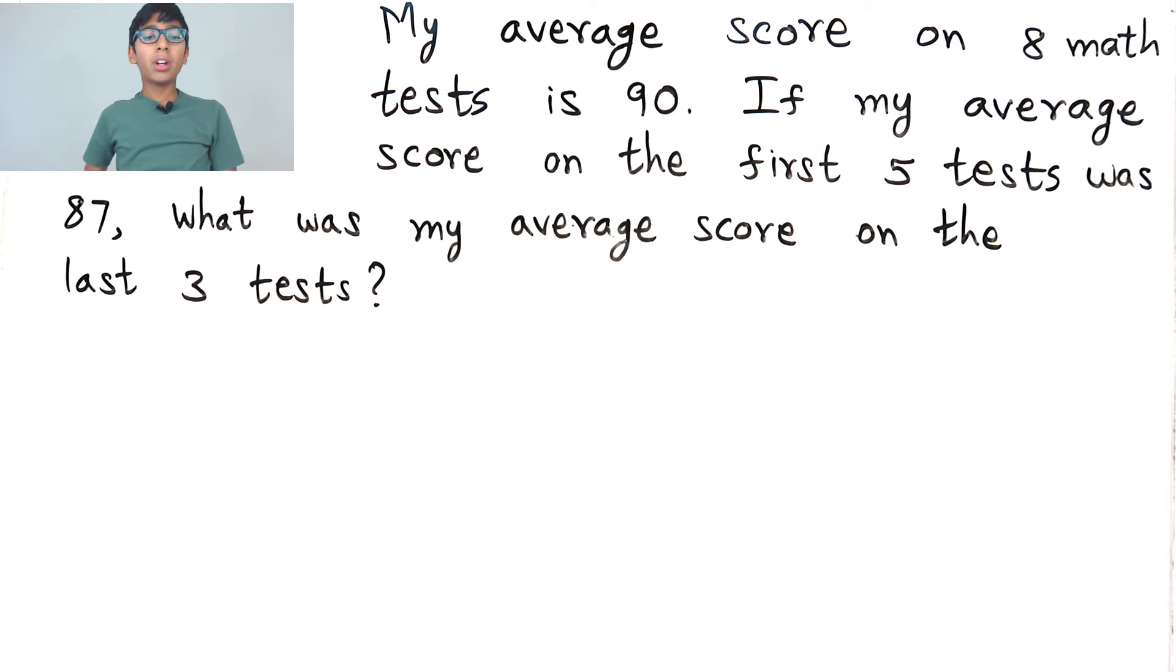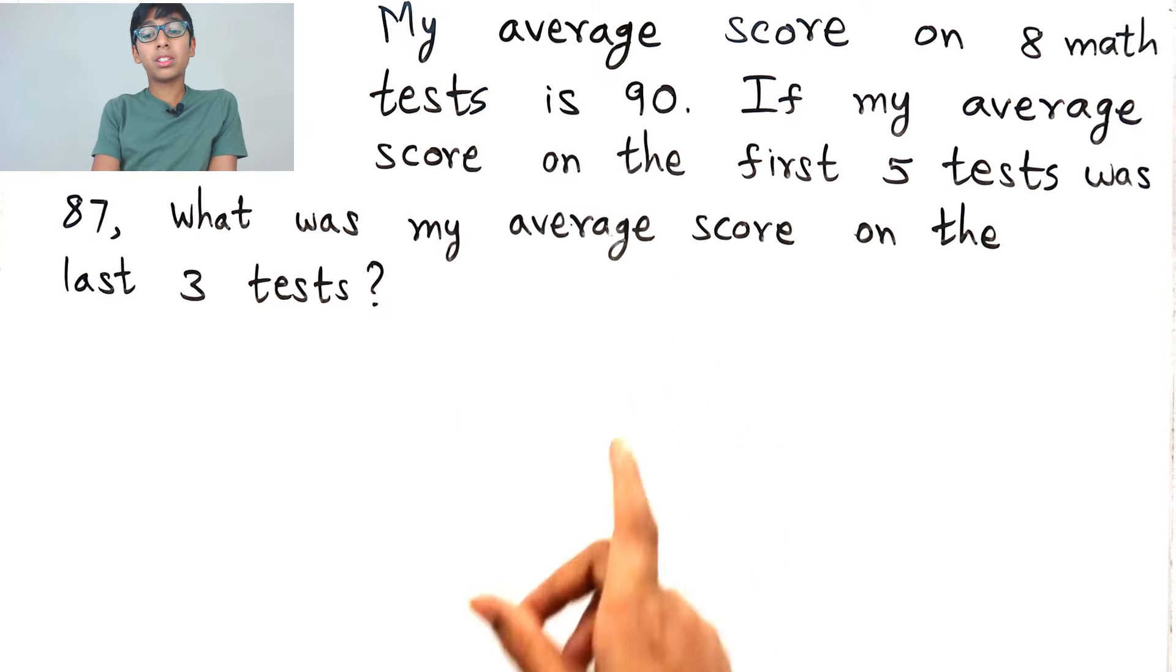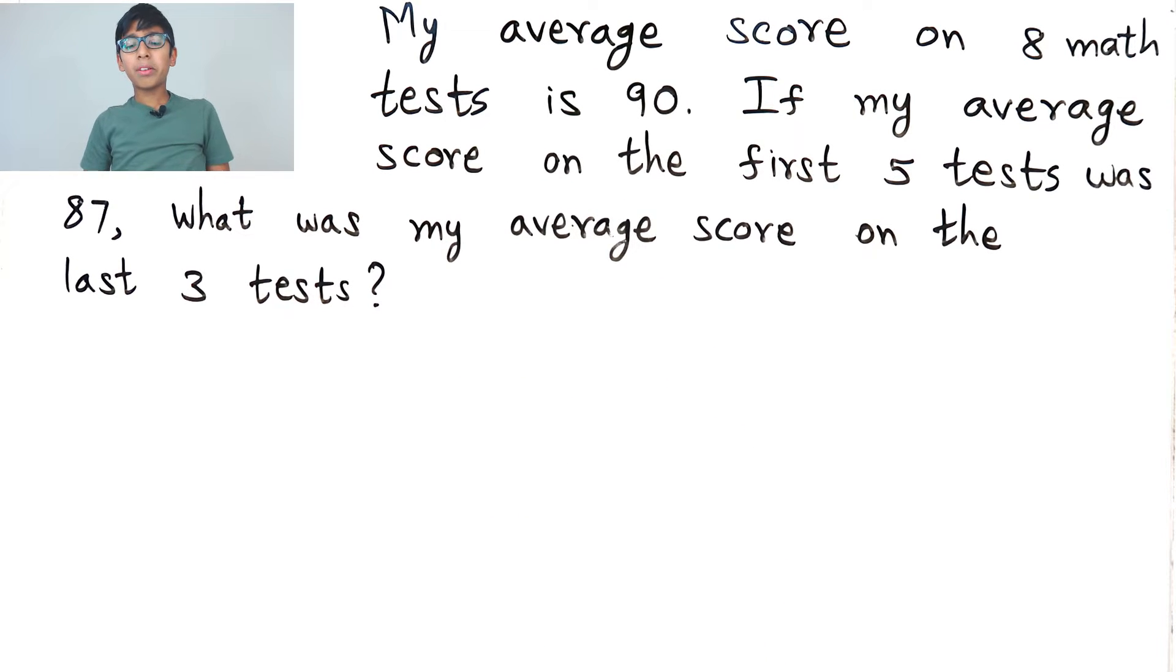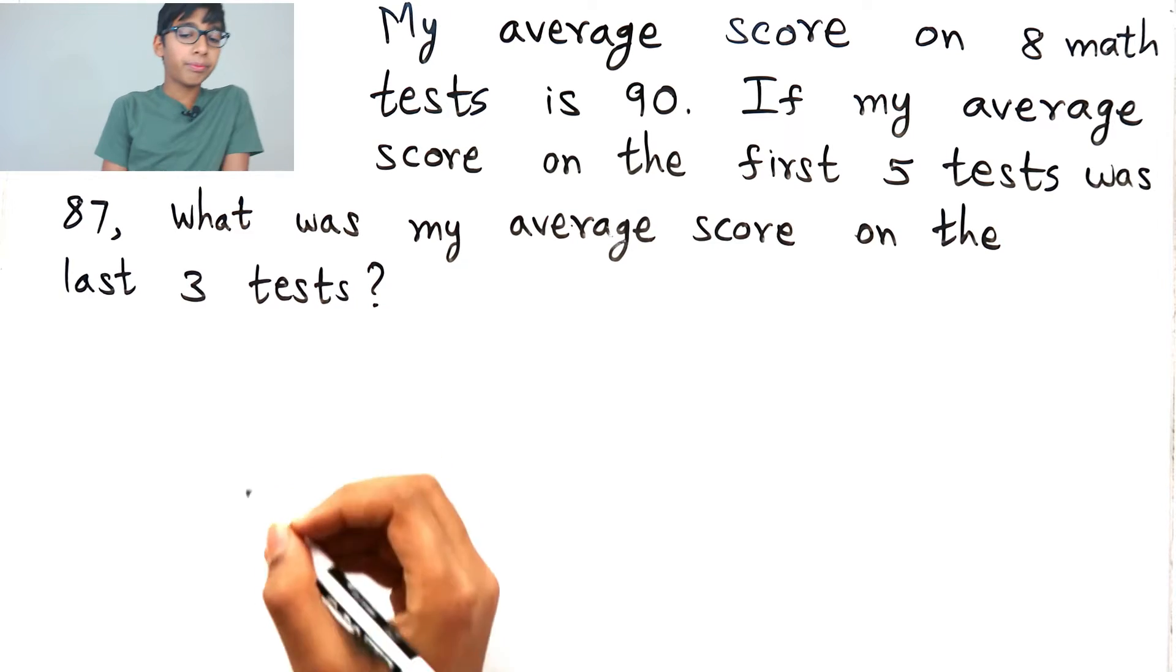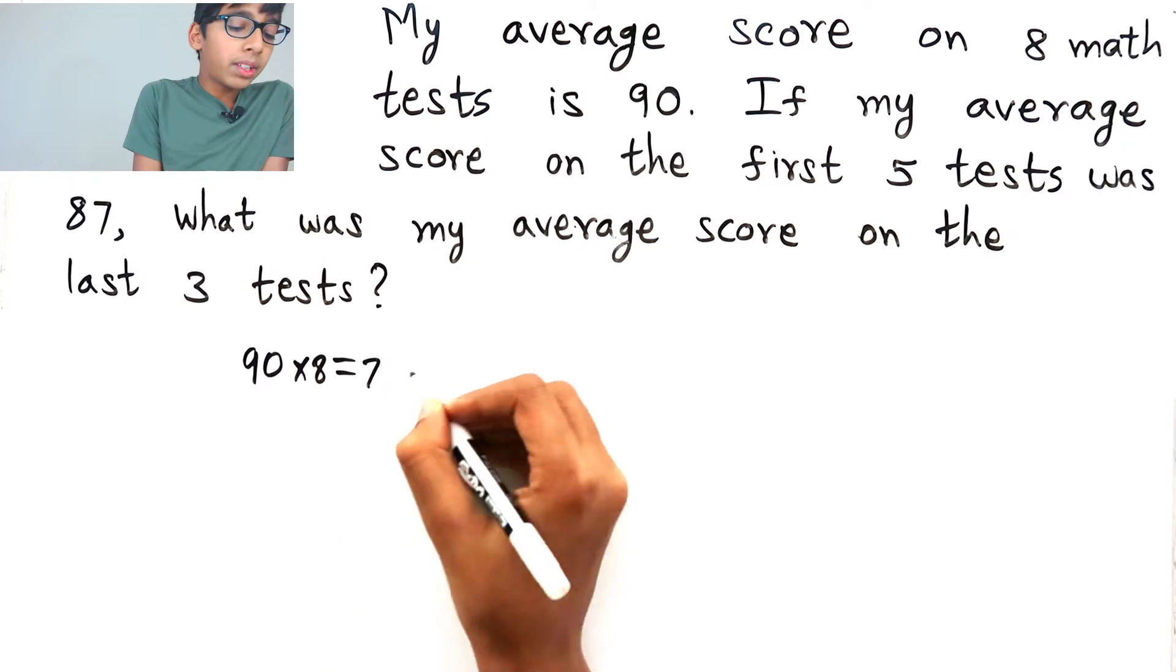Let's find out! Okay, so now, my average score on 8 math tests is 90. So let's find out how much points I scored in all of my math tests. So we have to do 90 times 8, which is 720.